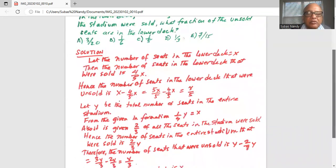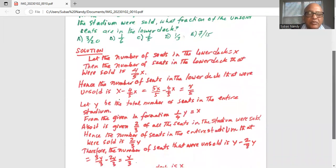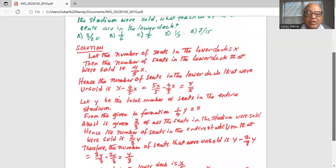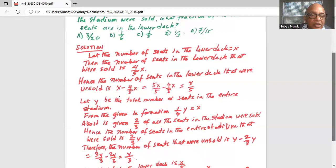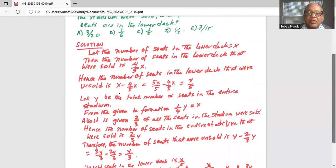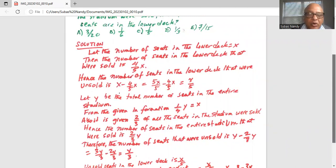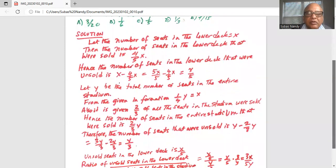Also it is given two-thirds of all the seats in the stadium were sold. Hence the number of seats in the entire stadium that were sold is two-third y. Therefore the number of seats that are unsold in the entire stadium is y minus two-third y, which is three y divided by three minus two-third y, or just y over three.